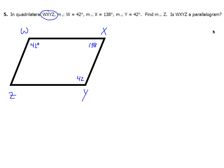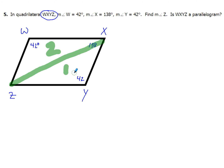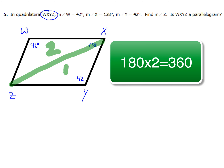If you totally forget that, here's one way around it: if we start at a vertex and draw a diagonal to the other side, we have two triangles. Each triangle has 180 degrees, and with two of them, that means a total of 360 degrees.